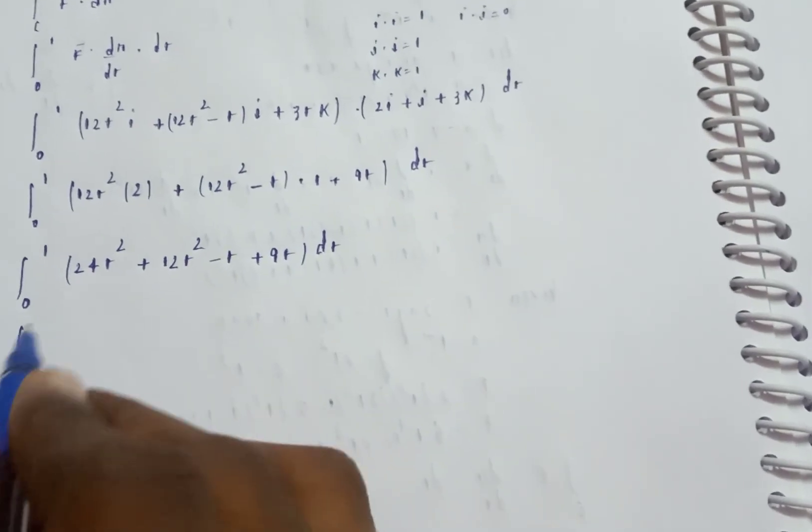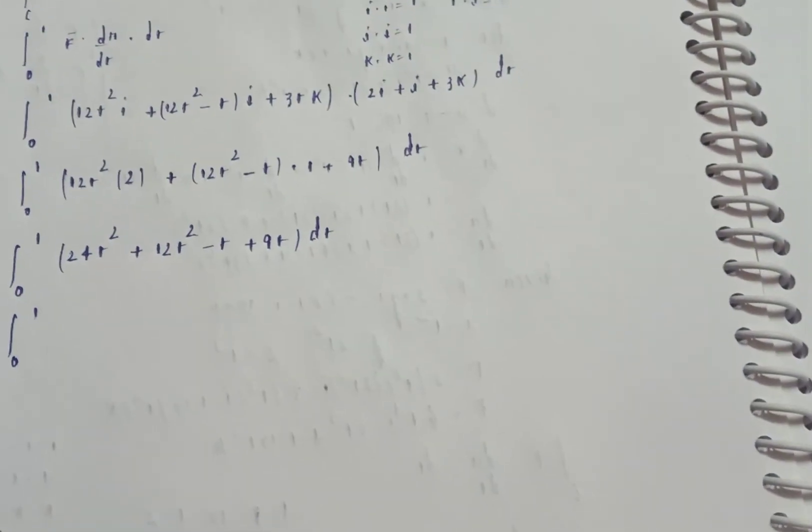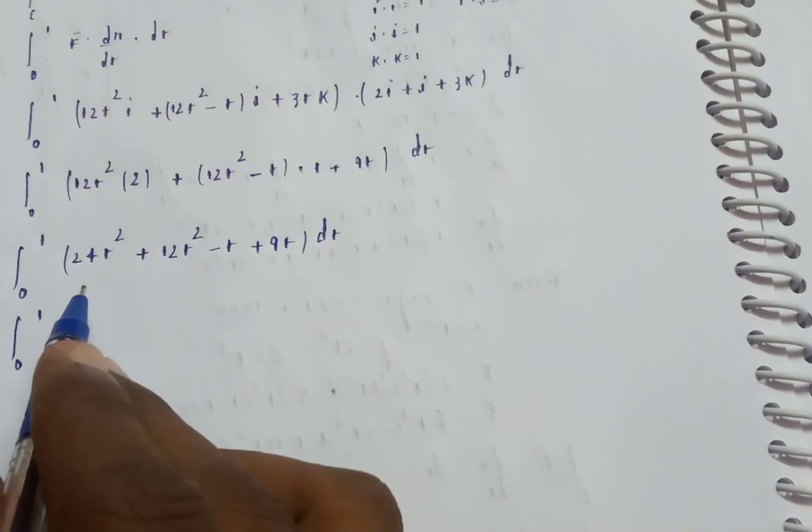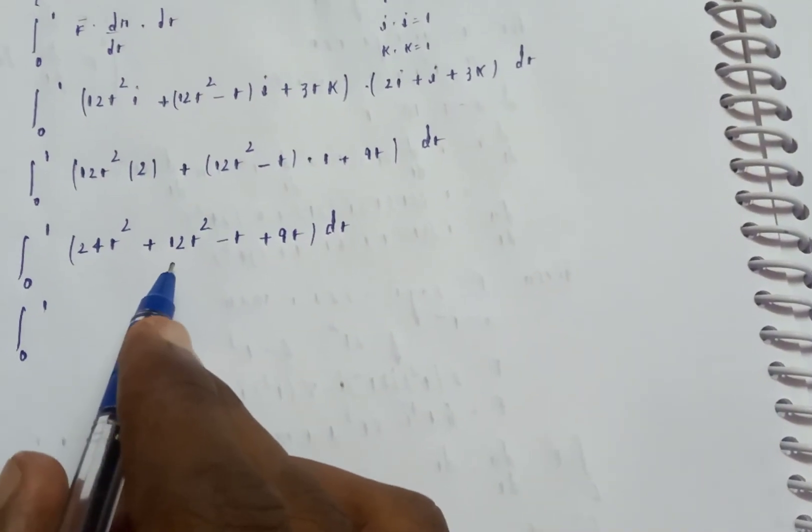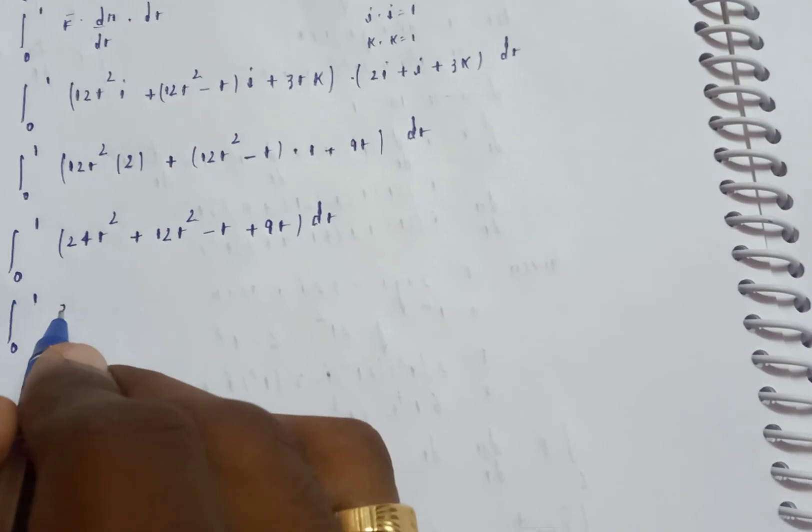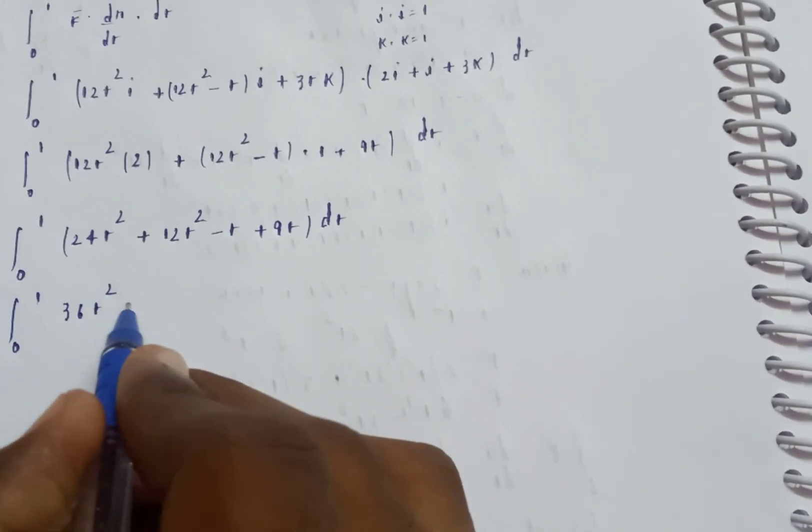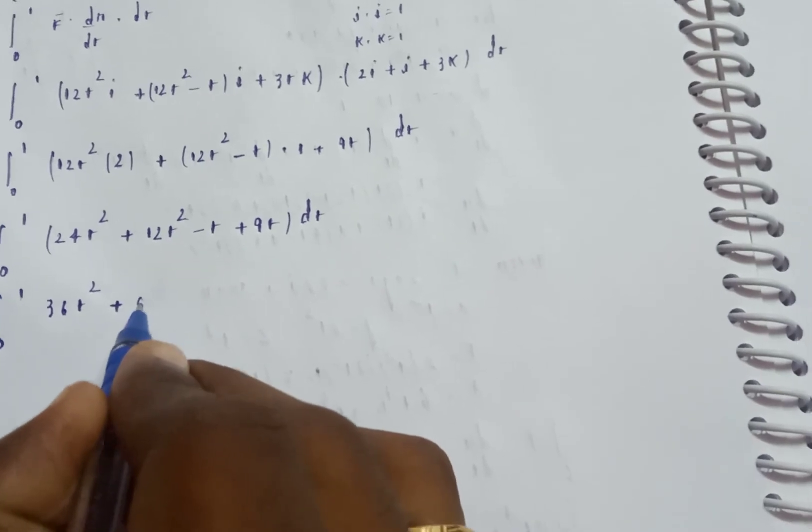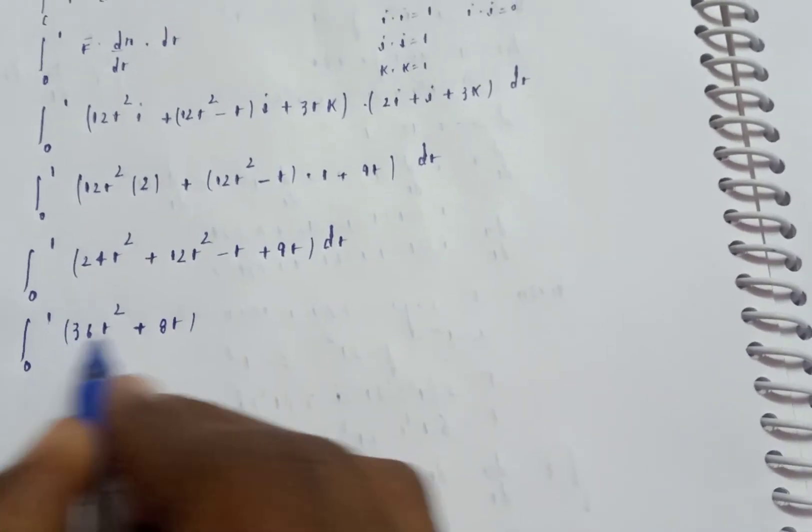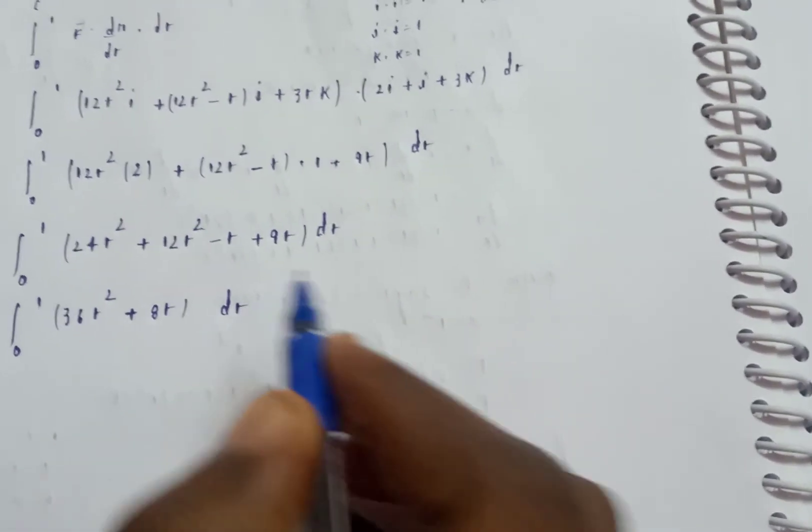Integral 0 to 1 of (36t square plus 8t) dt.